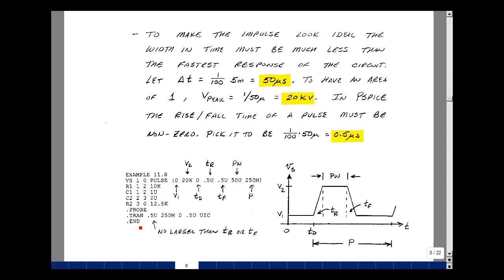Let's grab our schematic from page 4. I have a title Example 11.8, a dot end for graphing outputs. The pulse command specifies: start at 0 volts, go to 20,000 volts, with no time delay, rise and fall times of 0.5 microseconds, pulse width of 50 microseconds, and period of 250 milliseconds. Our largest time constant was 50 milliseconds, so five times that is 250 milliseconds, letting us see the five-time constant response.